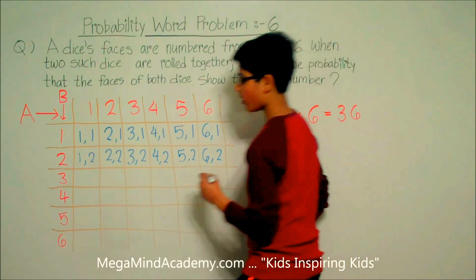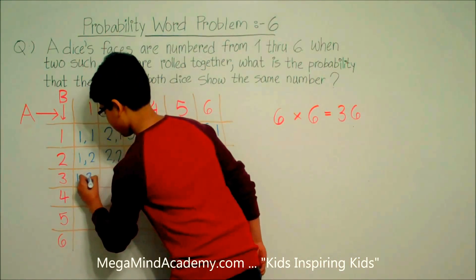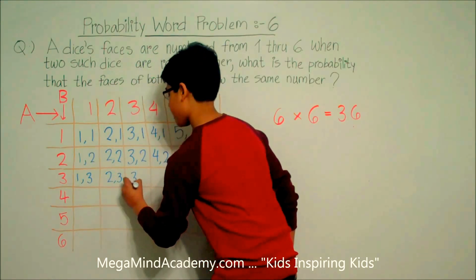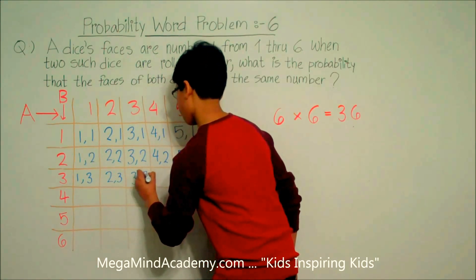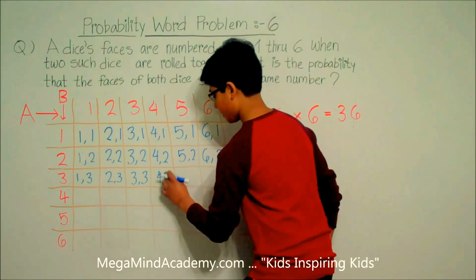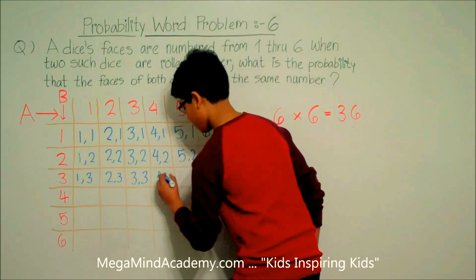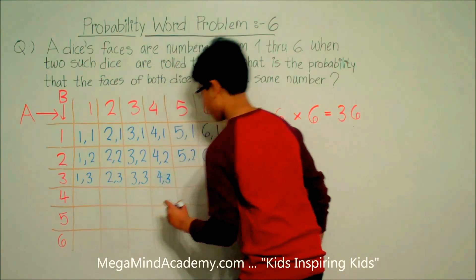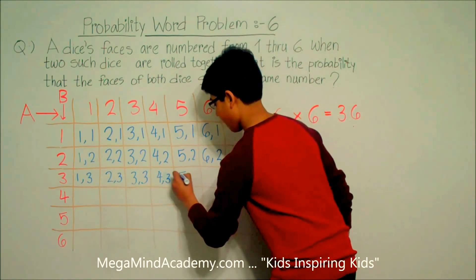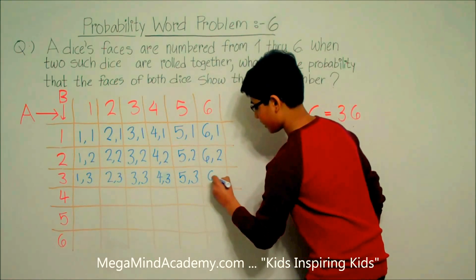The next row has 1 and 3, 2 and 3, 3 and 3, 4 and 3, 5 and 3, and 6 and 3.